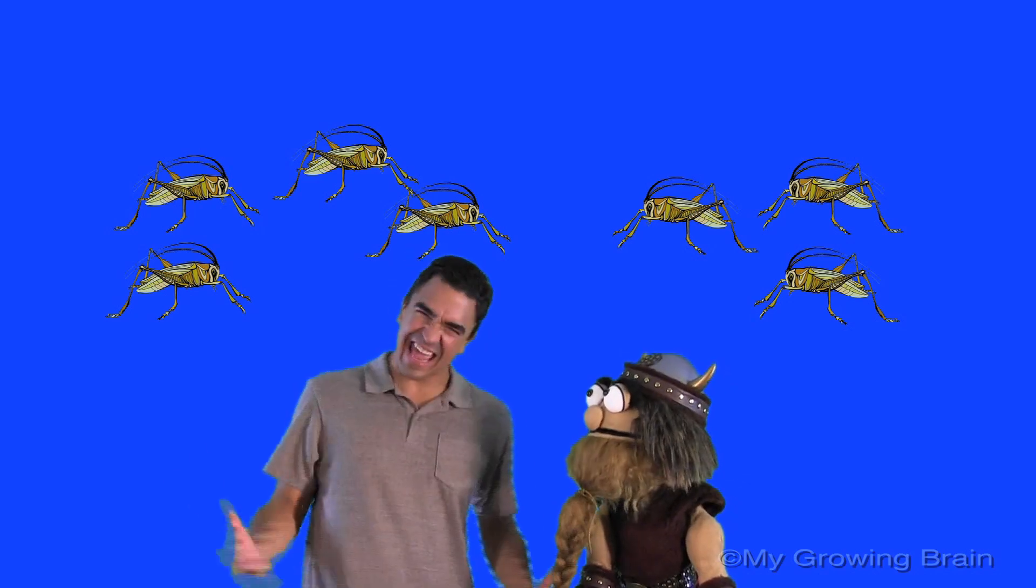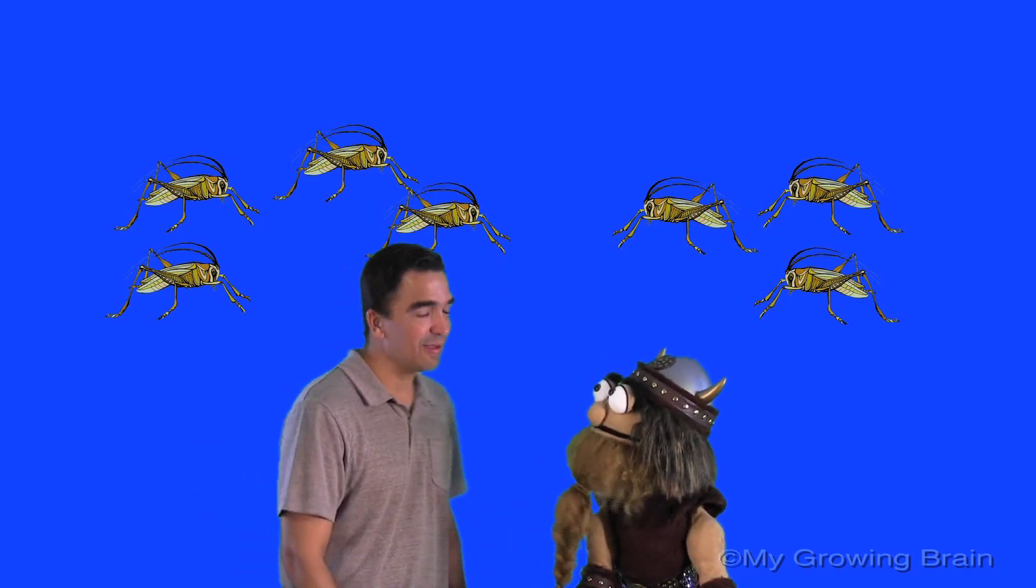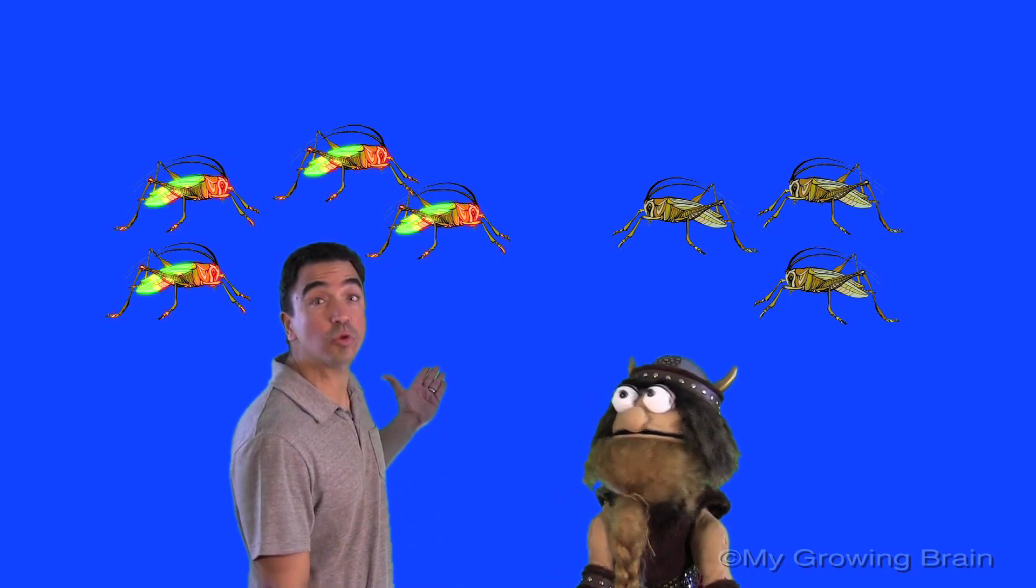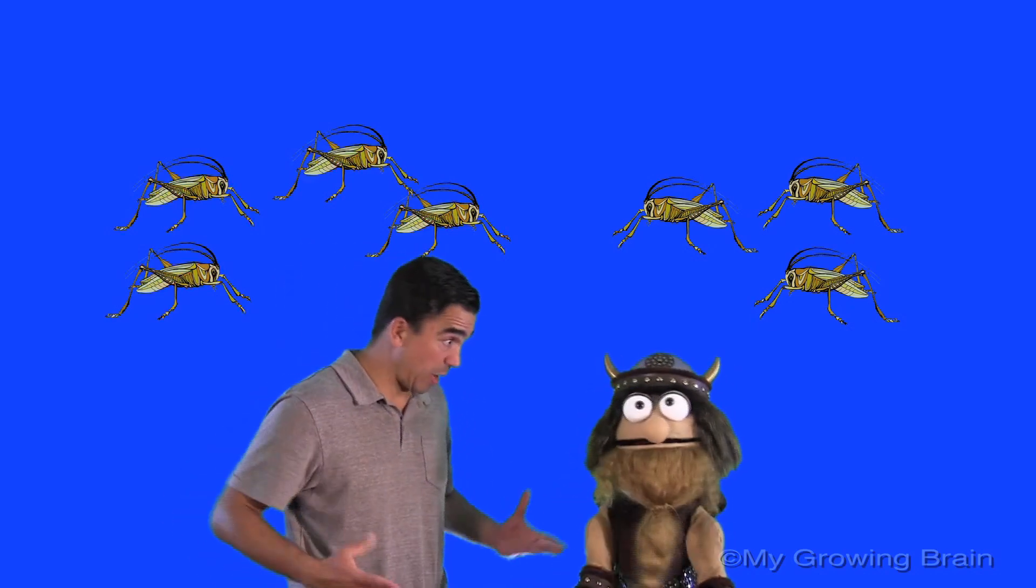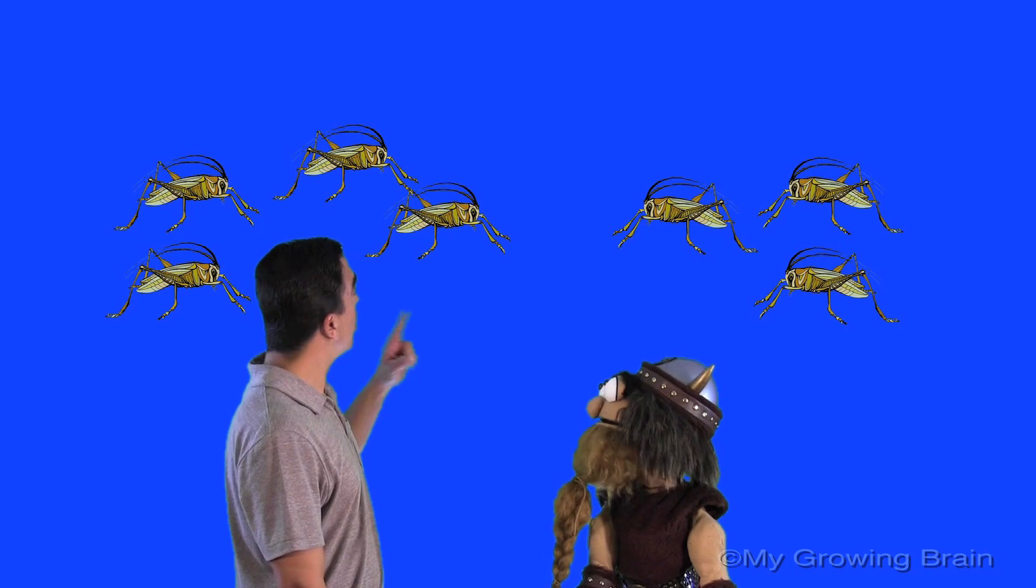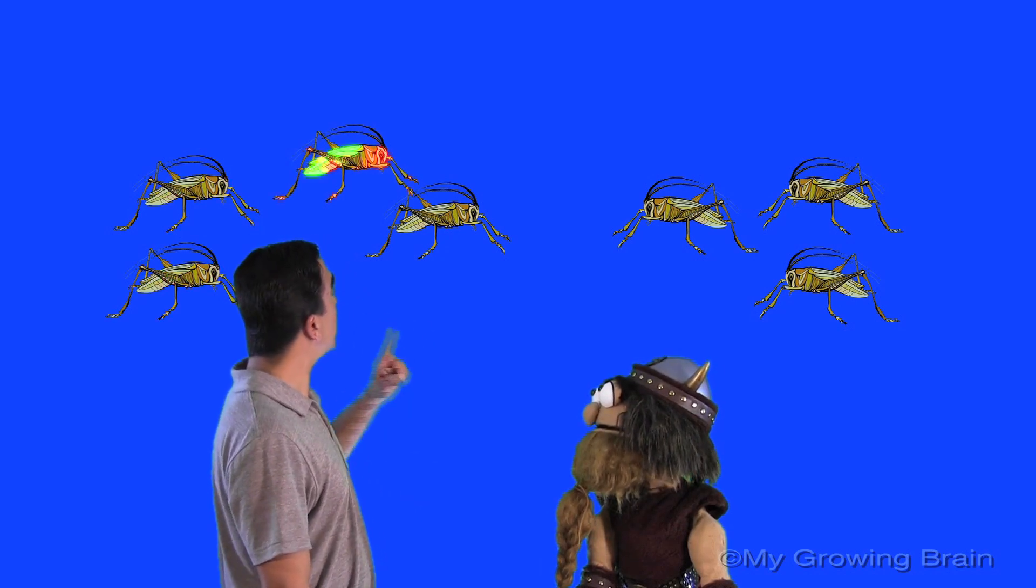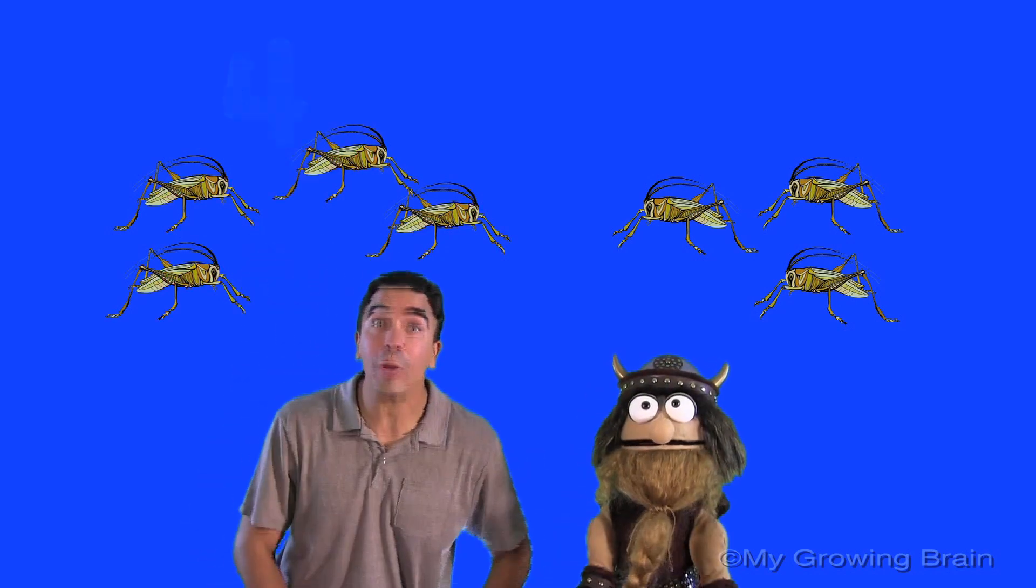We are, Coach Mike? Yeah! Well, how are we going to do that? Well, Oli, the first thing we have to do is count this group of crickets. Oh, okay, Coach Mike. Are you ready? Ready. Okay, here we go. One, two, three, four. Four crickets!